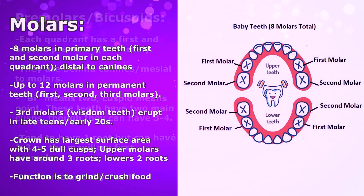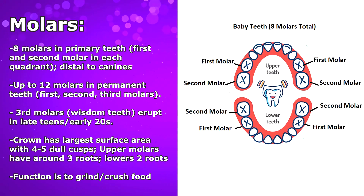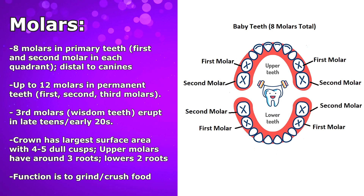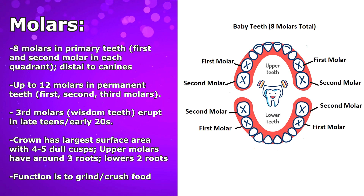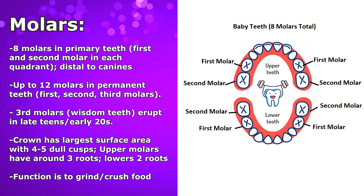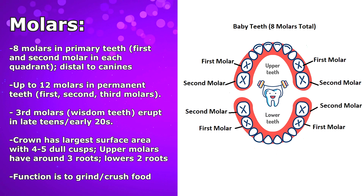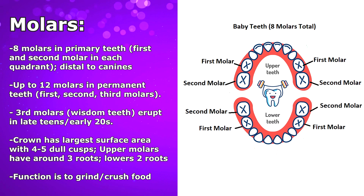And then finally, we have the molars, which are located at the posterior portion of each arch. Children are going to have eight molars in their primary or baby teeth, a first and second molar in each quadrant, so they're going to have four in each arch for a total of eight. And these are going to be distal to the canines.